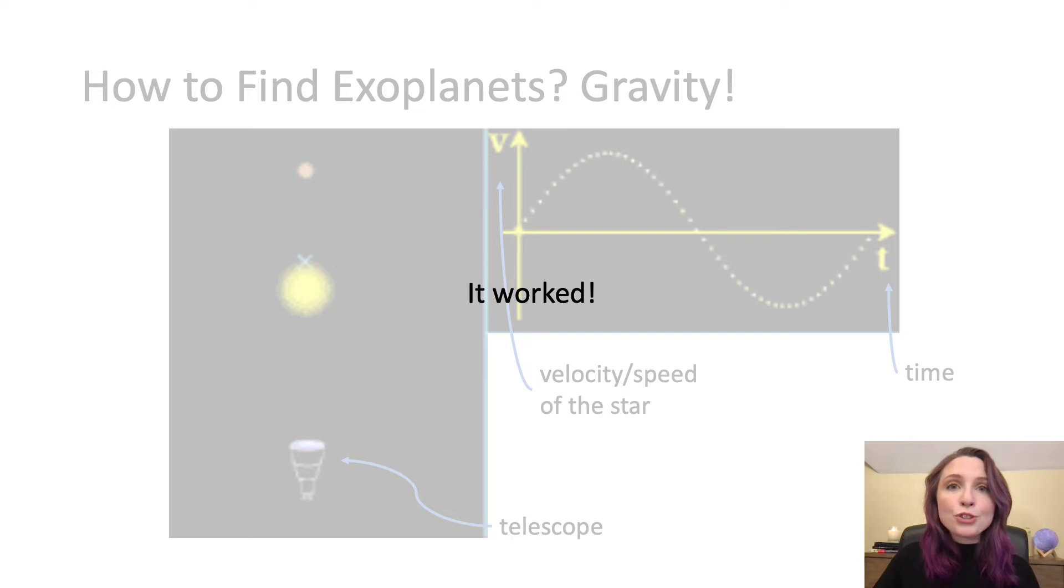And this actually worked. This is how astronomers discovered the first exoplanet back in 1995. And since then, over 900 other exoplanets have been discovered this way.